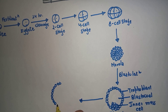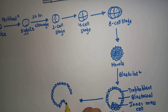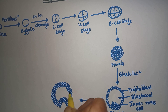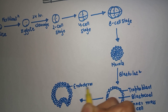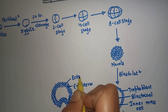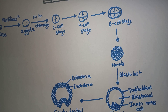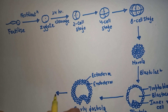Early gastrula has two germ layers. It has invagination. The inner one is endoderm — this is the endoderm layer — and the outer one is ectoderm. This is the early gastrula.